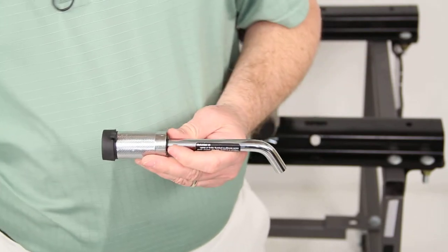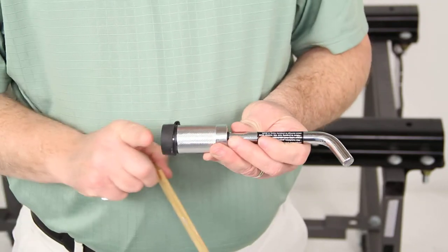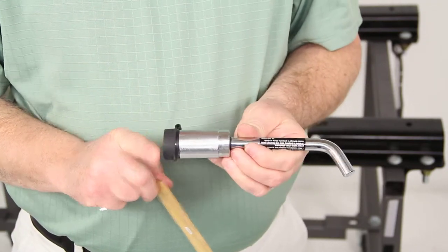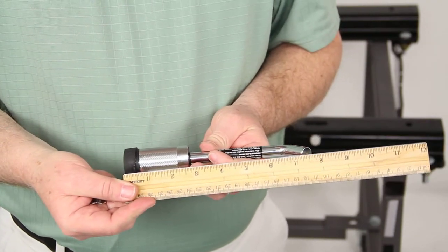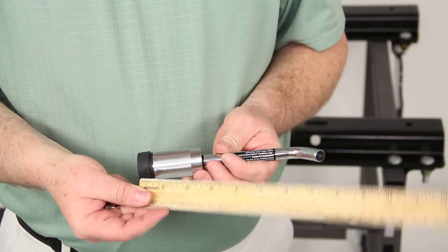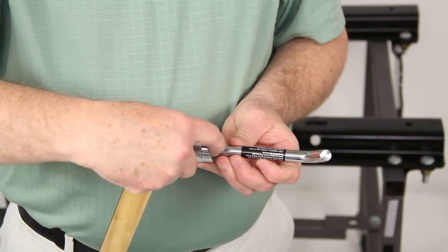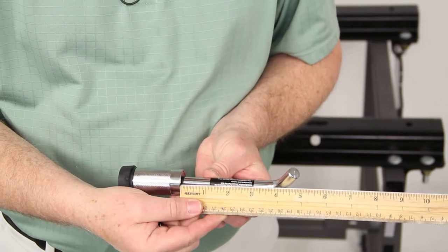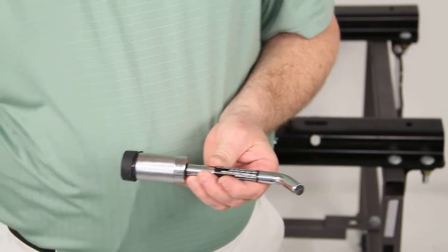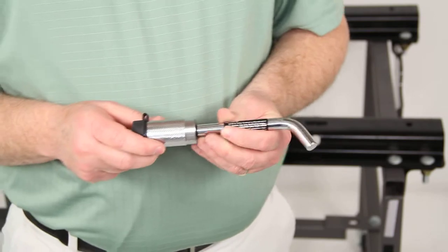Here are a few specs on this. The overall length from this end to the very end is right at seven and a half inches. The inside length, the measurement to where the bend starts, is right at three and a half inches. And again, the pin diameter is one-half inch.